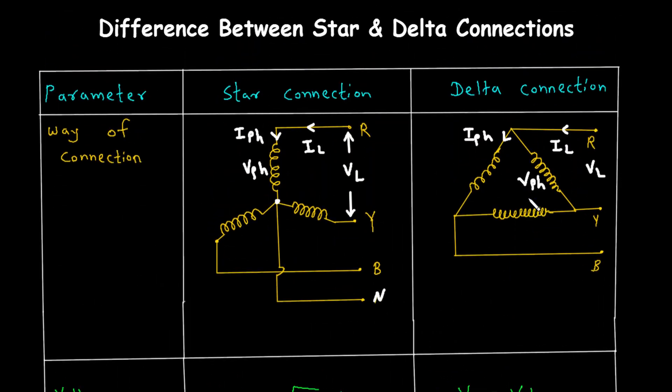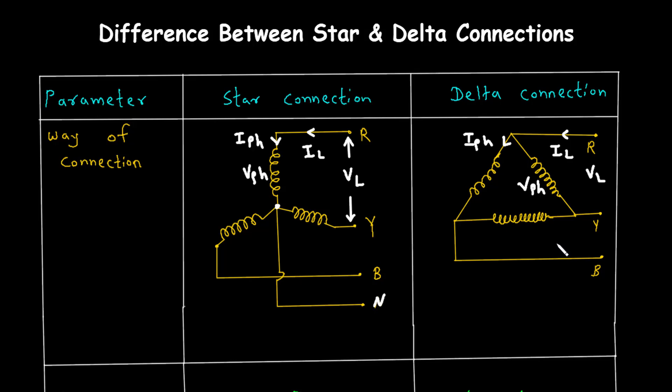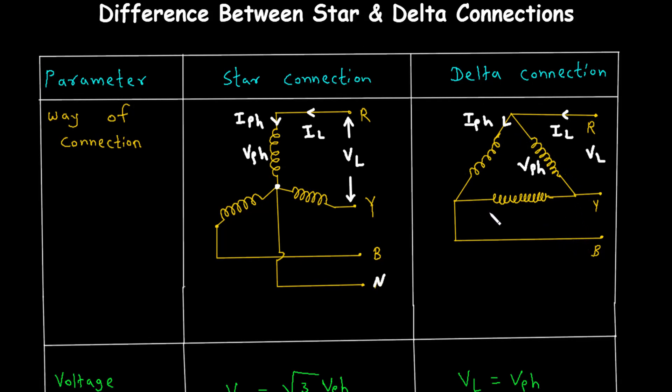In contrast to the star connection, the delta connection doesn't have a neutral point. Since the windings form a closed loop, there's no single point where the currents can converge and balance out.